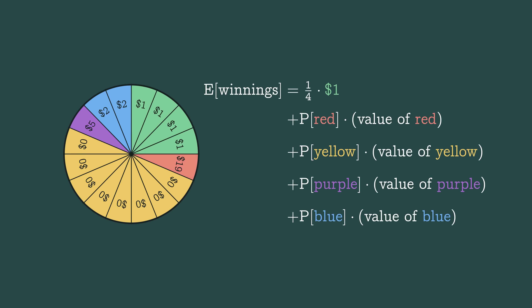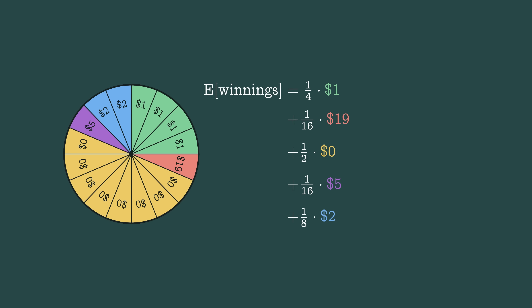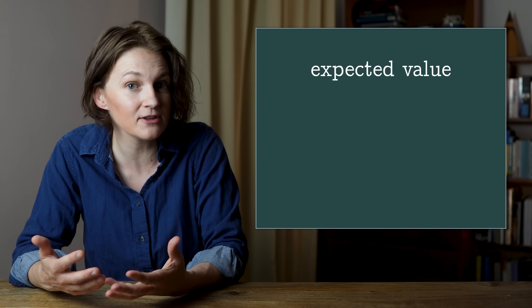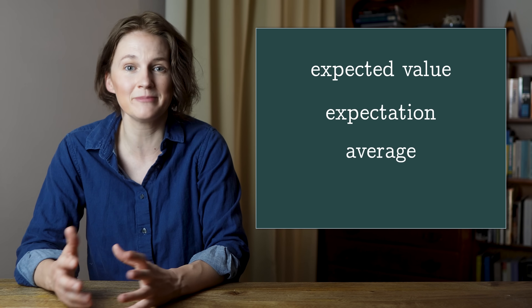There's a one-quarter chance of winning $1, a one-sixteenth chance of winning $19, a one-half chance of winning $0, and a one-sixteenth chance of winning $2. So your expected winnings are $2 — you win, on average, $2. Another word for expected value, or expectation, is average, or mean.